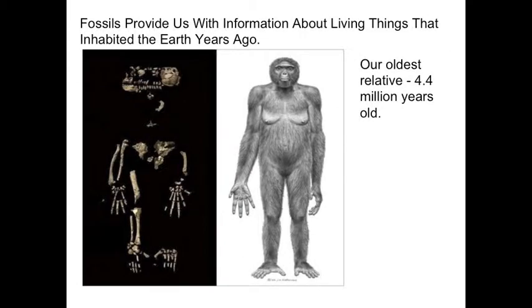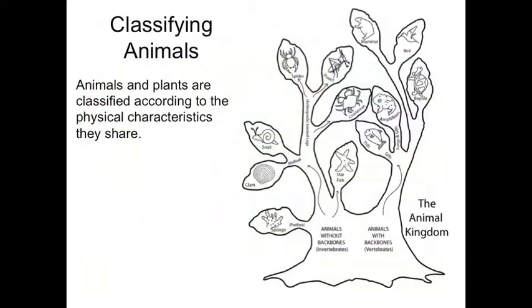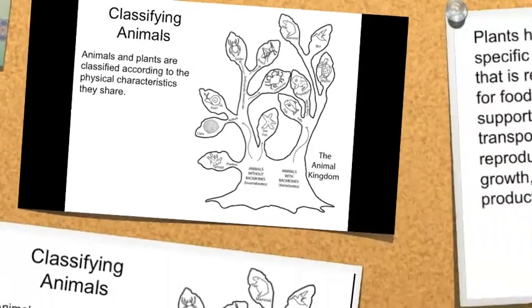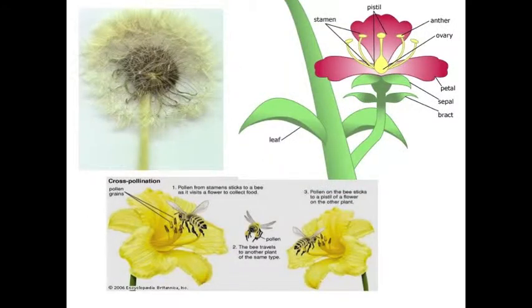Living relatives may have looked like this. All living things live in habitats. Here are some examples of animal habitats. Animals and plants are classified according to their physical characteristics. Photosynthesis is the process that feeds plants. Pollination is the way plants reproduce.